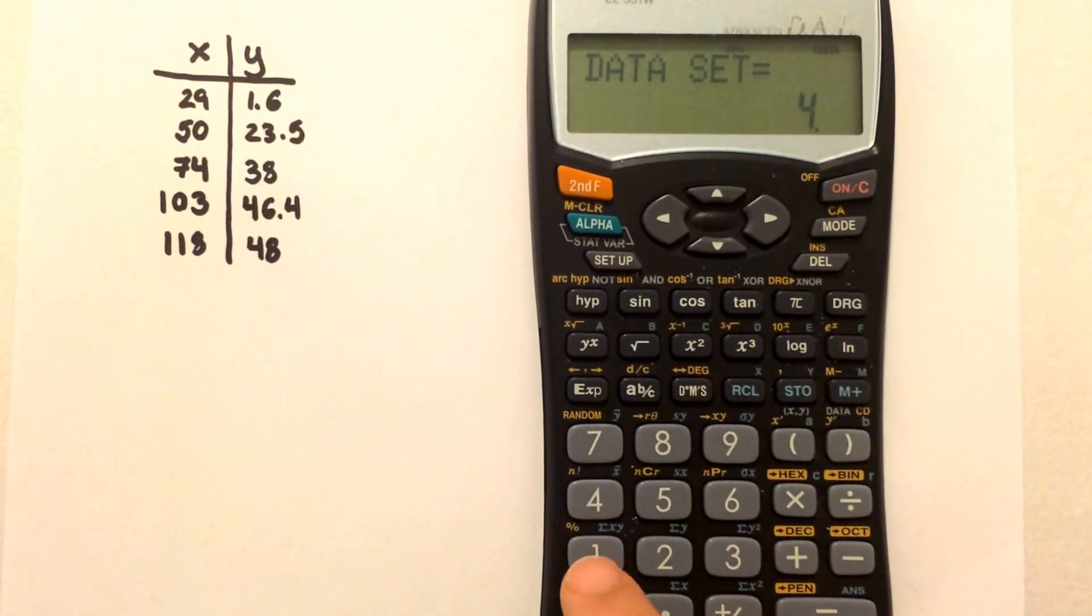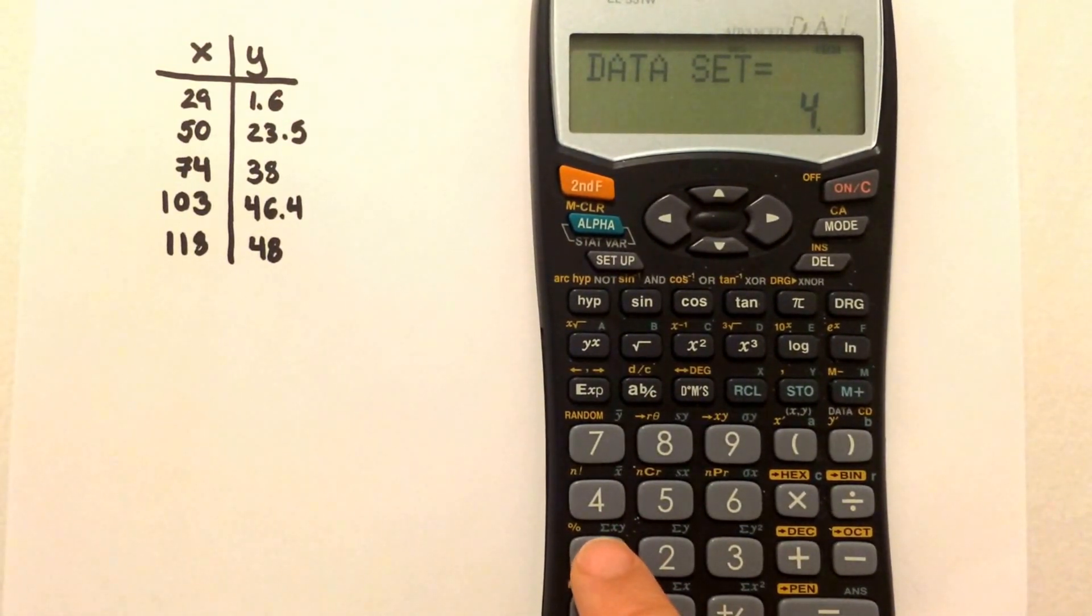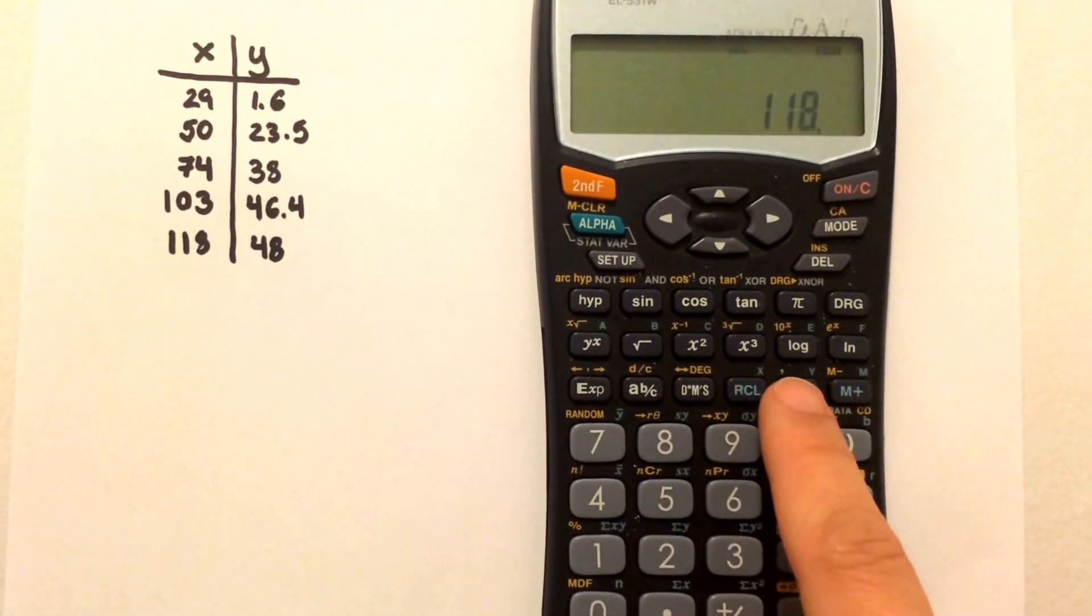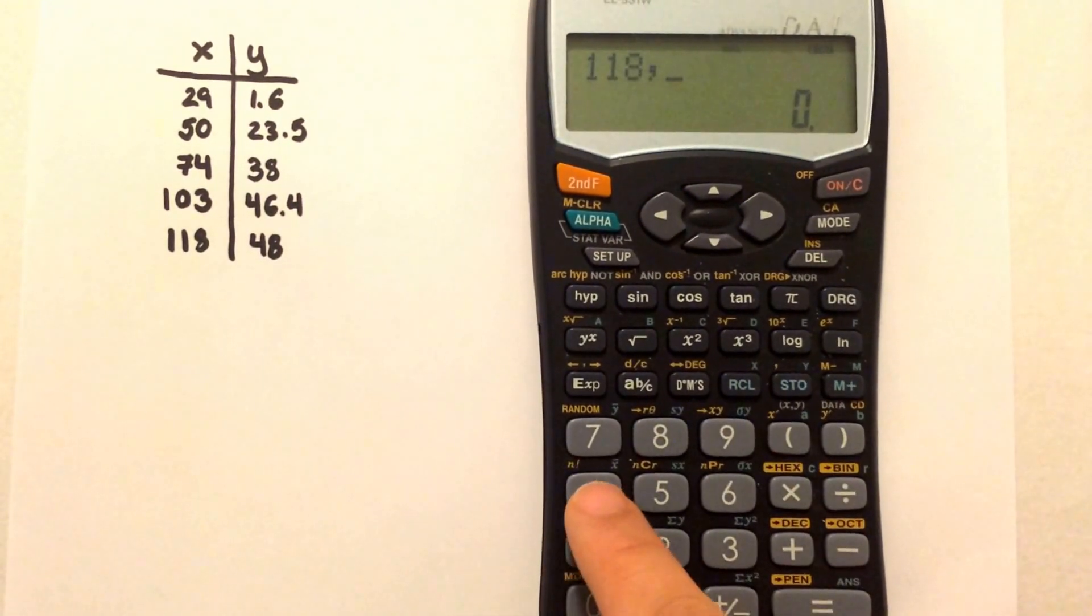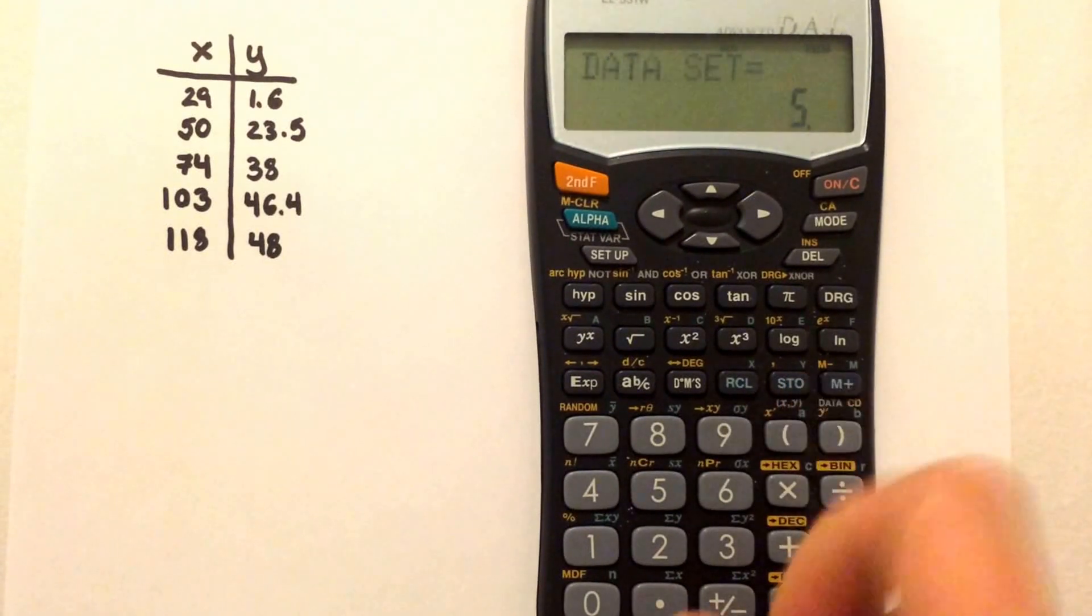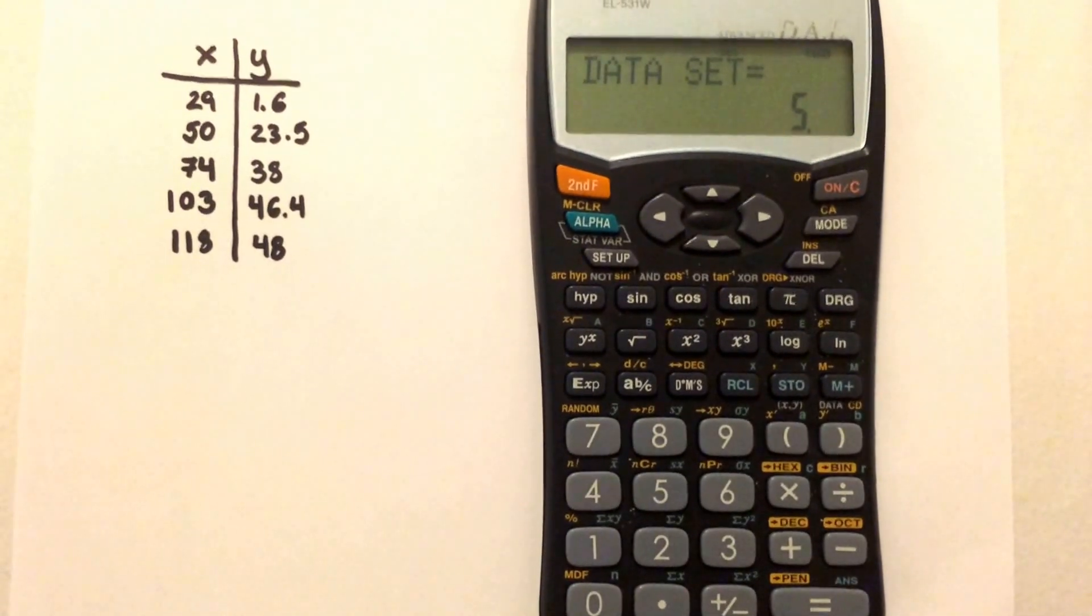And last one, we're at 4, so 118, this is the fifth one, and 48, M plus. So we have 5 data points.